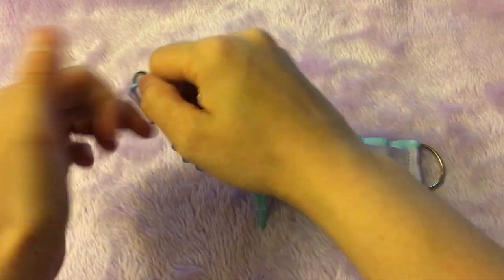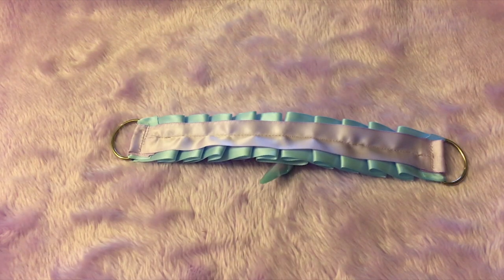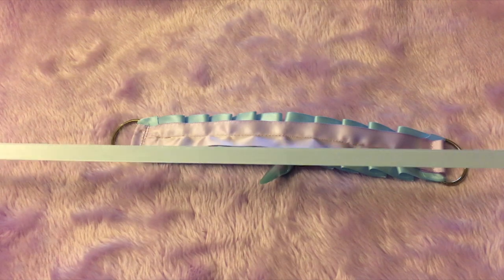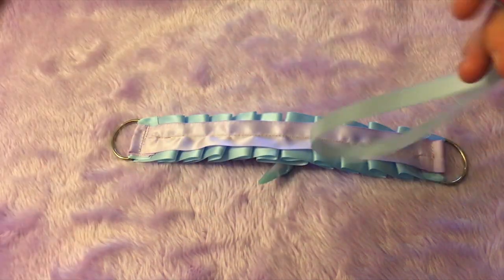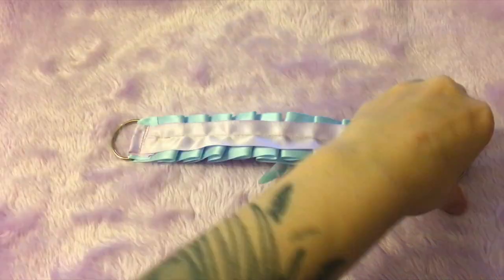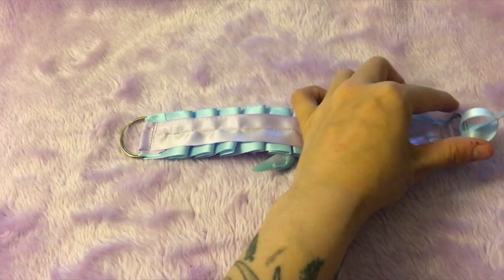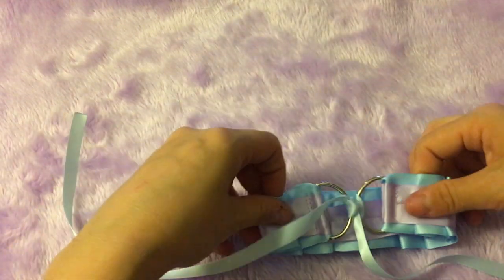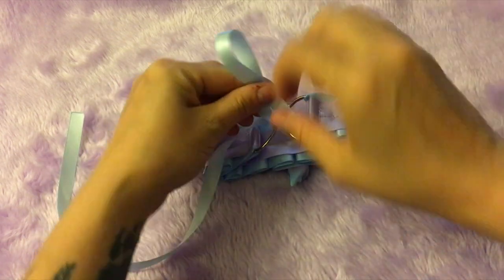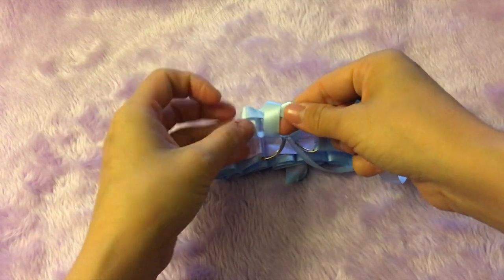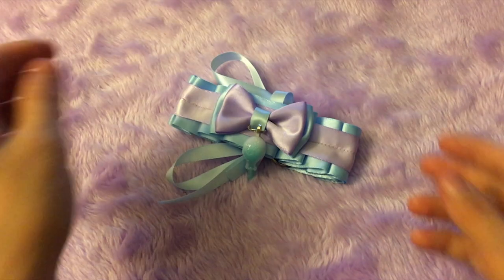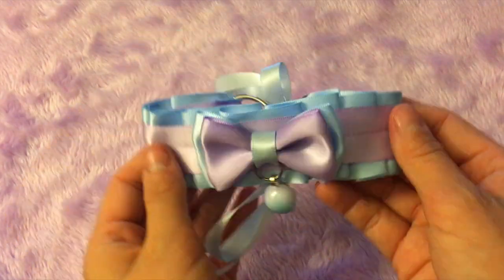Last thing you want to do is attach the tie and closure at the back. So grab about 15 to 18 inches of half an inch ribbon. Fold it. Have it go through the d-ring and then out from the loop. Pull really tight and then tie the d-rings together into a nice little bow. And that is how you make a standard kitten collar.